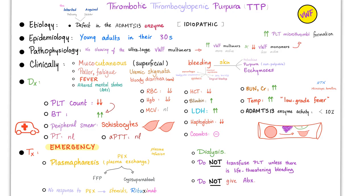Pallor and fatigue occur because of the microangiopathic hemolytic anemia. Fever was part of the pentad — remember TTP has five symptoms: microangiopathic hemolytic anemia, thrombocytopenia, acute renal failure, fever, and neurological abnormalities such as altered mental status. Uremic stigmata can happen because of the acute renal failure. Bloody diarrhea is rare in TTP — contrast that with hemolytic uremic syndrome, where bloody diarrhea was common.